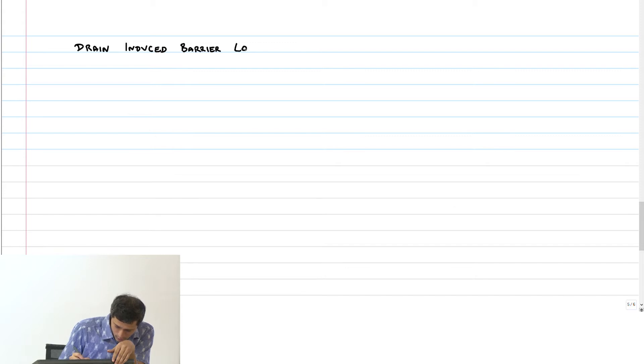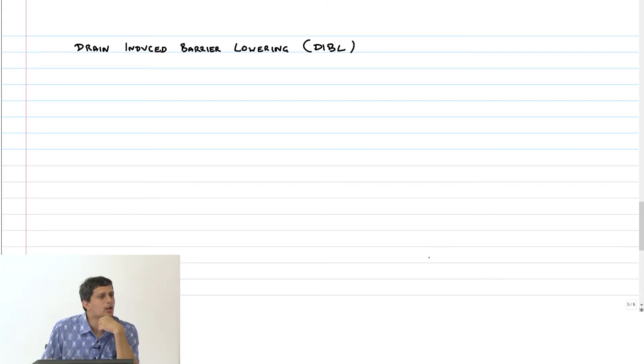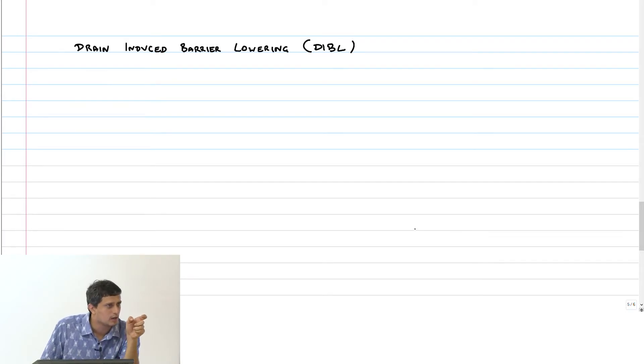With that, let me move on to the next short channel effect which is known as drain-induced barrier lowering, DIBL. This is the effect where because of the depletion region eating into the channel, the threshold voltage also changes.